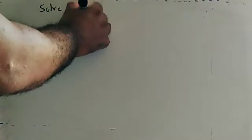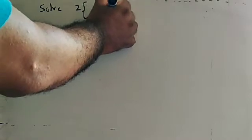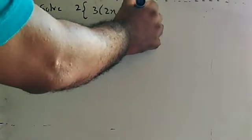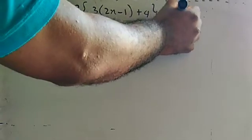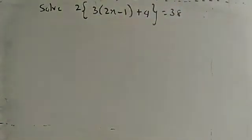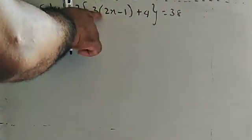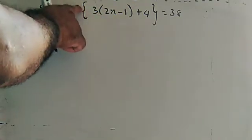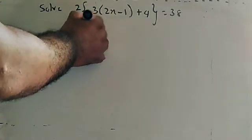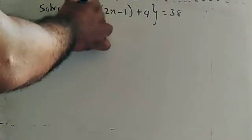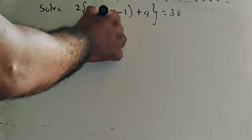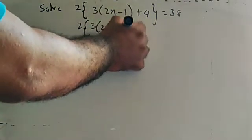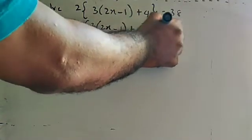They have given: Solve 2 times curly brackets 3 times (2x minus 1) plus 4 is equal to 34. You can see there are two types of brackets: parenthesis and curly brackets. There is multiplication by 2 outside. Firstly, divide both sides by 2. Two and two cancel, leaving 3 times (2x minus 1) plus 4 equals 38 divided by 2, which is 19.